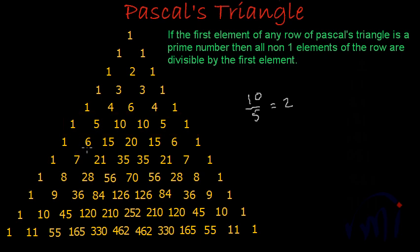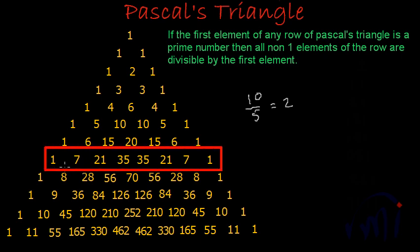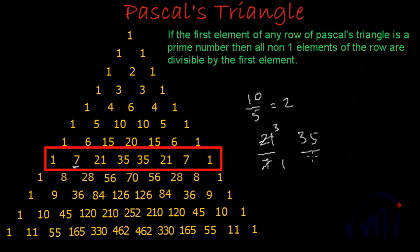For the sixth row, six is the first number and it is a compound number, so we need not check. For the seventh row, seven is the first number and the other elements are twenty-one, thirty-five, thirty-five, and twenty-one. Twenty-one divided by seven gives three, and thirty-five divided by seven gives five. So twenty-one and thirty-five are divisible by seven.